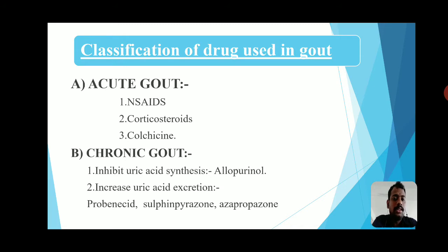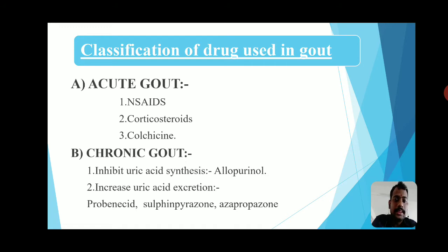For chronic gout, two categories of drugs are used. First, inhibitors of uric acid synthesis — the drug allopurinol. Second, drugs that increase uric acid excretion, also called uricosuric drugs — these include probenecid, sulfinpyrazone, and azapropazone.